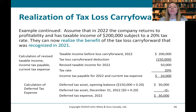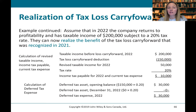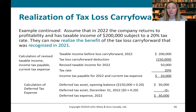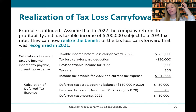Now assume that in 2022, the company returns to profitability with taxable income of $200,000 subject to a 20% tax rate. They can now realize the benefit of the tax loss carry forward accrued in 2021. Taxable income before the carry forward is $200,000; we subtract the $150,000 tax loss carry forward deduction — this is the base, not times the tax rate — giving revised taxable income of $50,000. At a 20% tax rate, income tax payable is $10,000, which is our current tax expense.